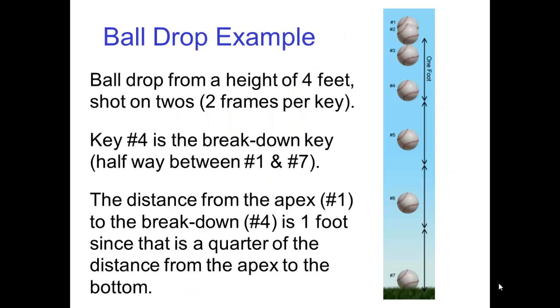Here's an example of a ball drop from a height of 4 feet shot on 2s, that is 2 frames per key drawing. Key number 4 is the breakdown key, halfway between number 1 and number 7. The distance from the apex to the breakdown is 1 foot since that is a quarter of the distance from the apex to the bottom.